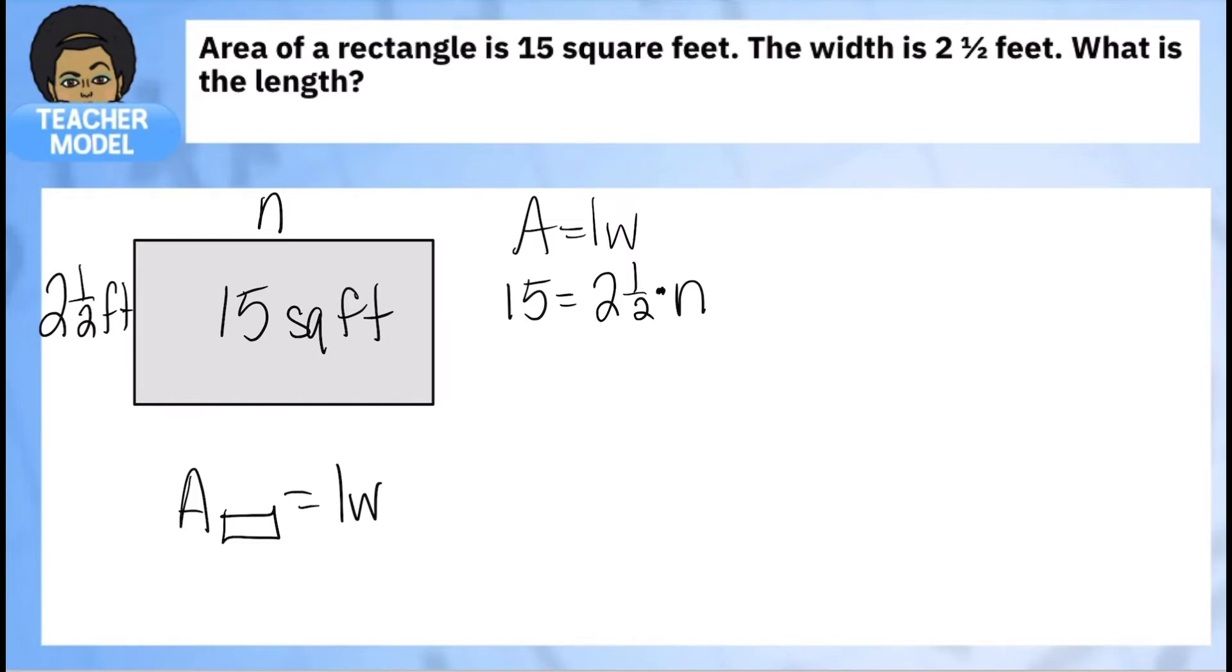But I do know that I can use my fact families to rewrite it. So I'm going to rewrite this as a division problem. 15 divided by two and a half will give me that missing dimension, that number.